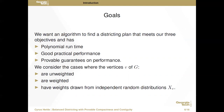We consider several different types of weight scenarios for the vertices: unweighted vertices where all have a uniform constant weight; weighted vertices where these weights can vary; and a stochastic setting where weights are not known ahead of time but are instead drawn from independent random distributions x_v, where these distributions may vary from vertex to vertex.